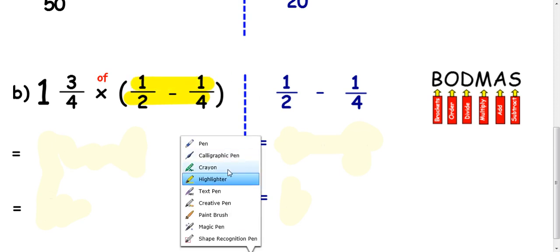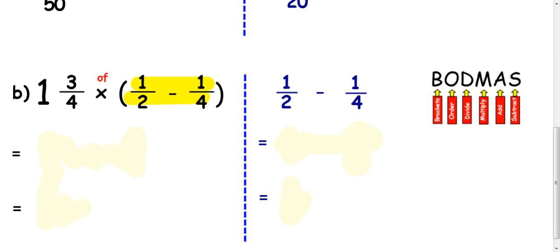So I draw a wee dotted line and I'm going to do that at the side. So 1 half take away a quarter. The most common multiple of that is 4. I'm going to change the half into quarters and I'm going to leave this quarter alone. So how do I get from 2 up to 4? I double it. Do the same to the top. So I've got 2 quarters take away 1 quarter.